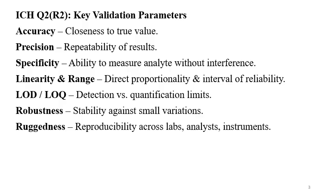The validation parameters provided by ICH Q2 include precision, specificity, linearity, range, LOD, LOQ, robustness, and ruggedness. Whenever you are developing or validating a method, you should always remember these key parameters.